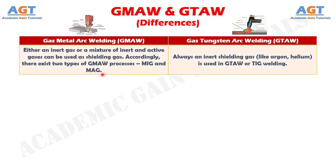Number five: in gas metal arc welding, either an inert gas or a mixture of inert and active gases can be used as shielding gas. Accordingly, there exist two types of gas metal arc welding processes: MIG welding and MAG welding. Whereas an inert shielding gas like argon or helium is always used in gas tungsten arc welding, or TIG welding.